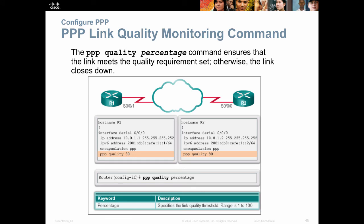For quality and error rate, you can set a quality percentage — for example, 80% — which will drop the link if you can't maintain 80% throughput. So if the error rate hits 20%, it's going to drop the link and bring it right back up, resetting it.